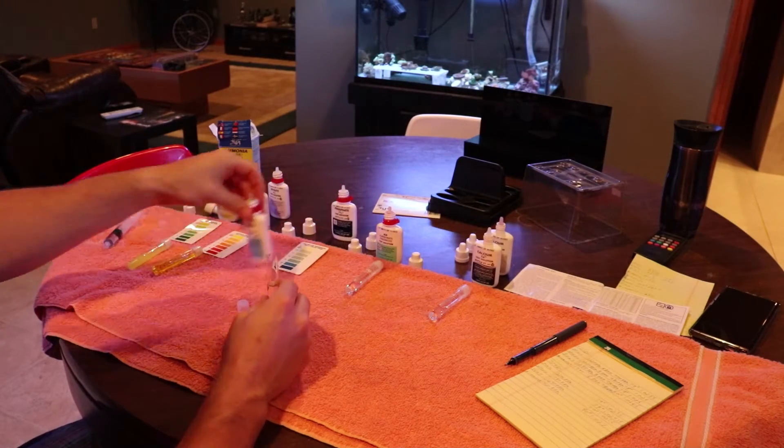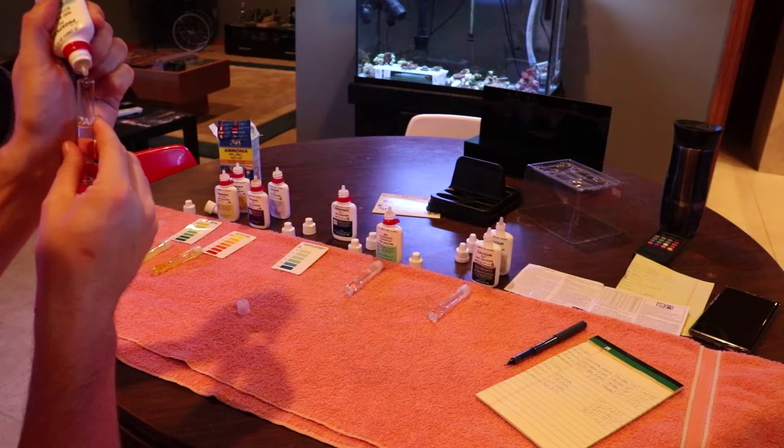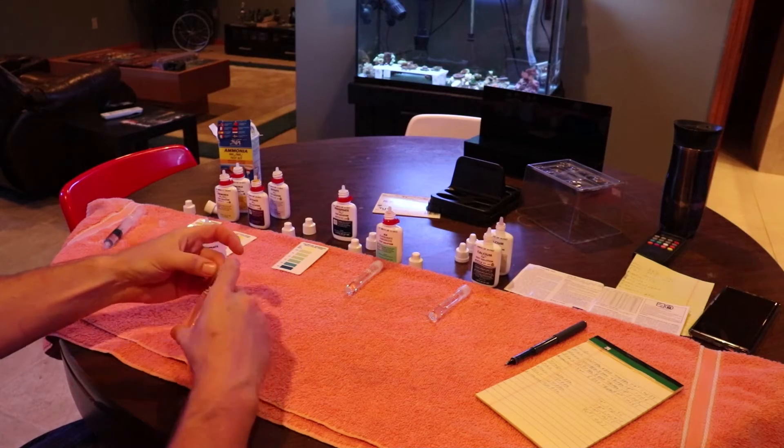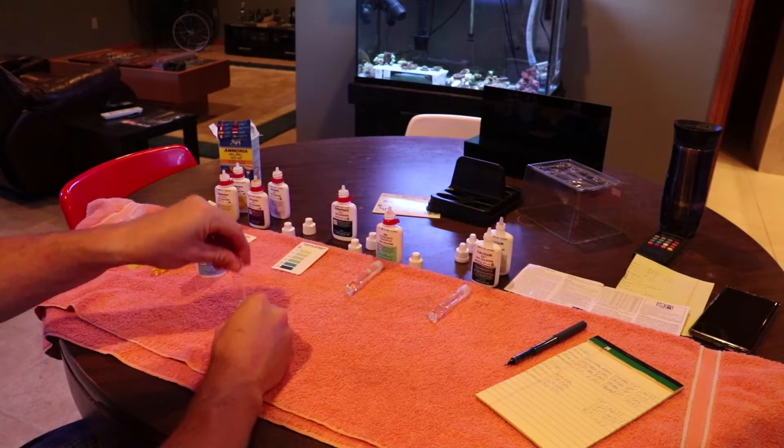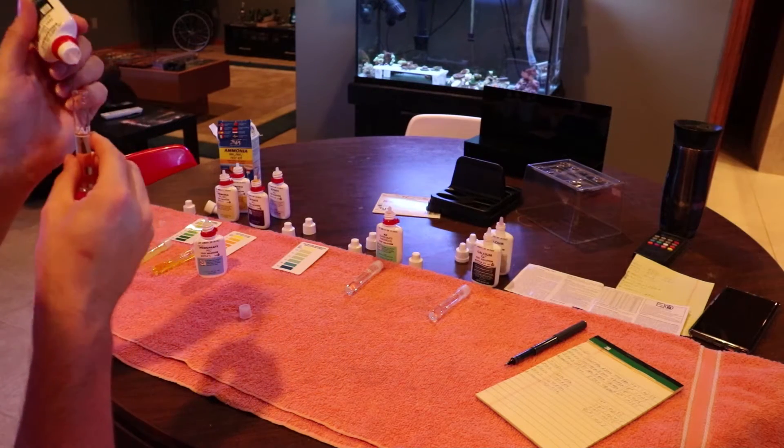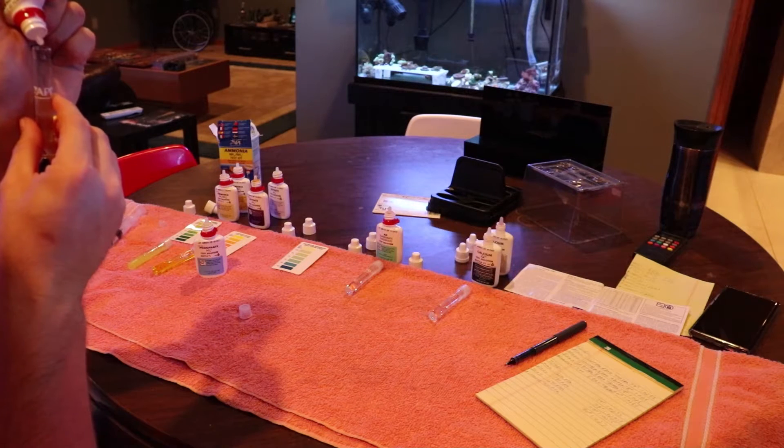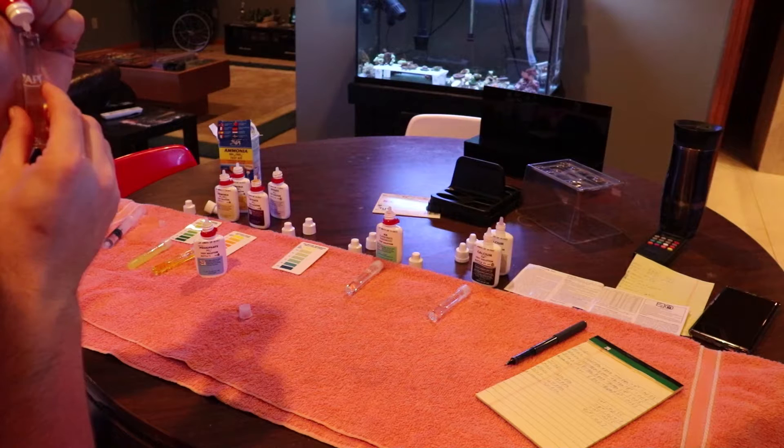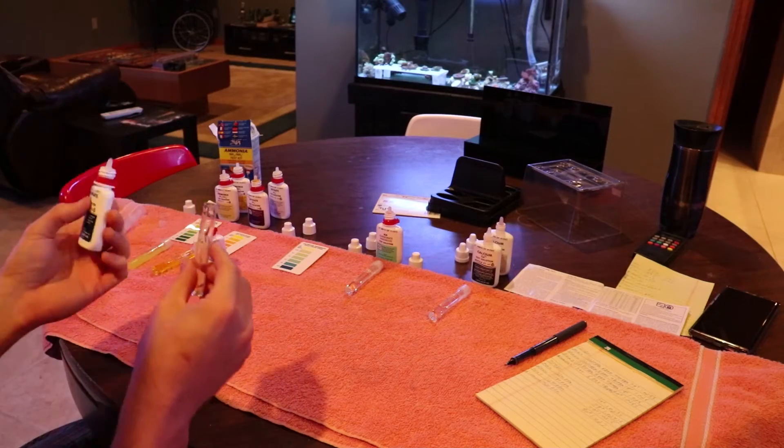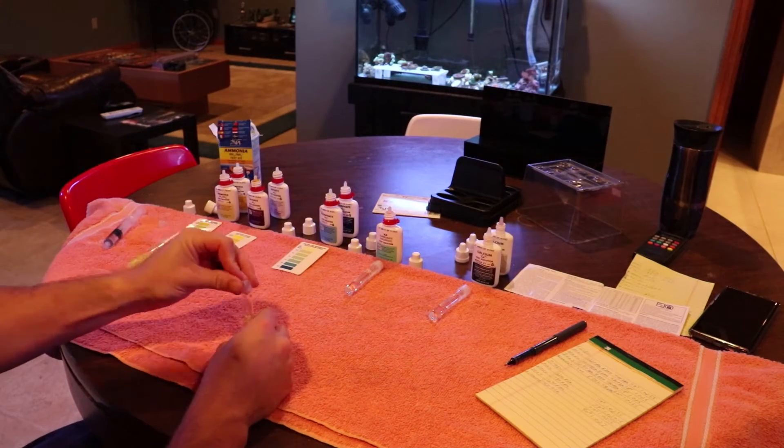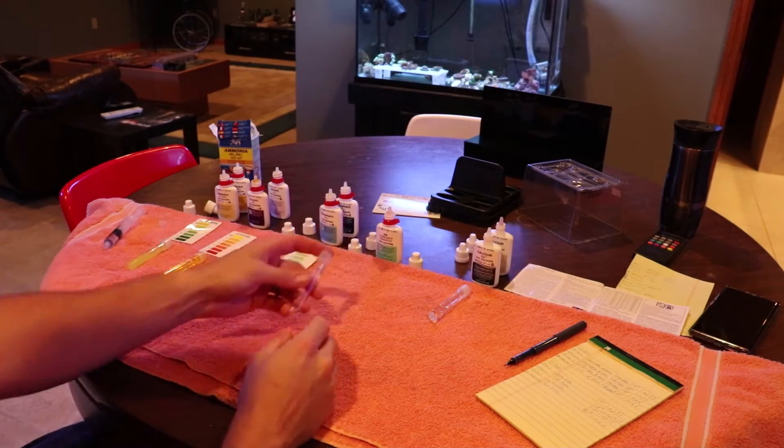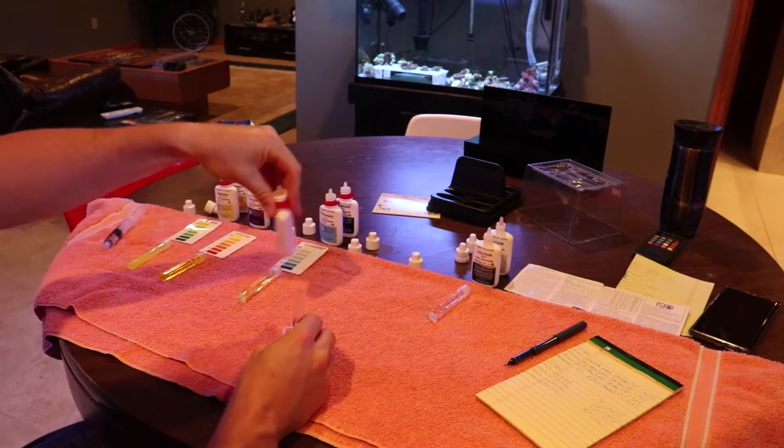Next is phosphate. I'm testing for phosphate. Bottle number one, you do six drops, put the cap on, shake it. Now bottle number two, it's six drops as well, but bottle number two the liquid is very viscous, it's almost like a gel. You got to be careful, you got to squeeze pretty hard to get it out, but it's easy to over squeeze and shoot a whole bunch out. You don't want that, just six drops. Put your cap back on, give it a shake, then it's got to sit for at least three minutes before you can read it.